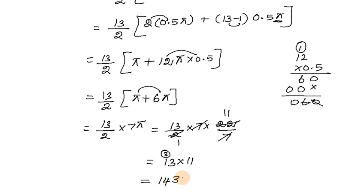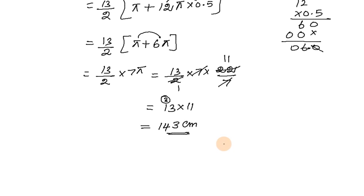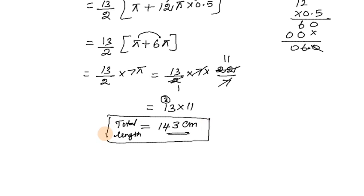The units are centimeters — the initial radius was 0.5 cm and increments of 1 cm. So the total length of the spiral consisting of 13 semicircles is 143 cm. Please check the working at the bottom. Thank you.